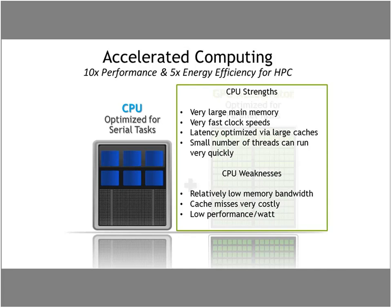CPUs have their strengths. CPUs tend to have very large main memory — on a laptop you may see 8 or 16 gigabytes, on a workstation as much as a terabyte. CPUs also have very fast clock speeds, which enables them to run sequential operations very quickly. That comes with a trade-off: very fast clock speeds mean the cores are very hungry and can't afford to stall out. Things like memory latency can be very costly on a CPU, and CPUs have optimized away memory latency through caches.